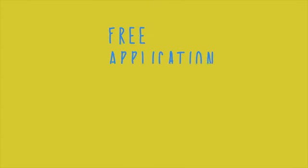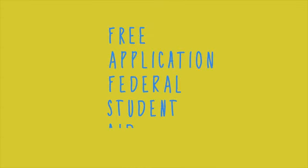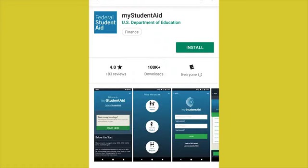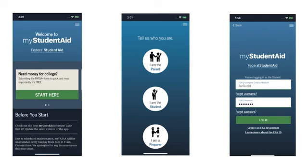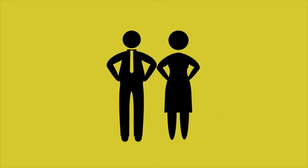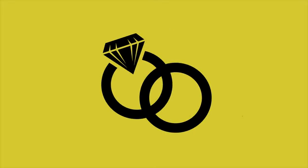The Free Application for Federal Student Aid, or FAFSA, is used to apply for financial aid to help students pay for college and college-related expenses. The FAFSA can be filled out and submitted at www.fafsa.gov, or you can download the My Student Aid app to complete it there. The FAFSA determines if you'll need parental information, such as your parents' marital status and tax filing information.